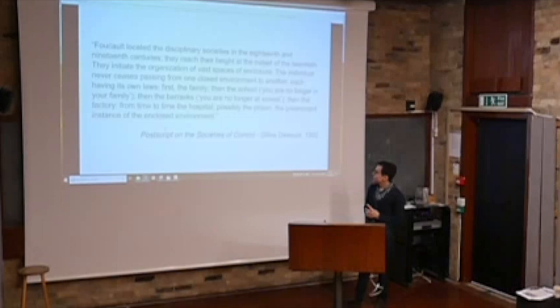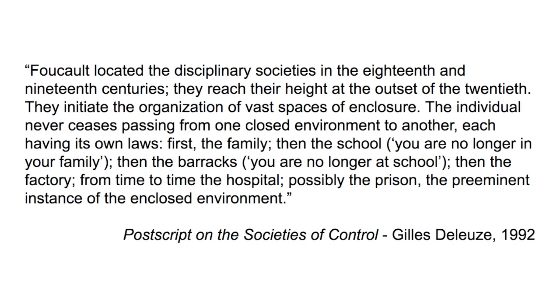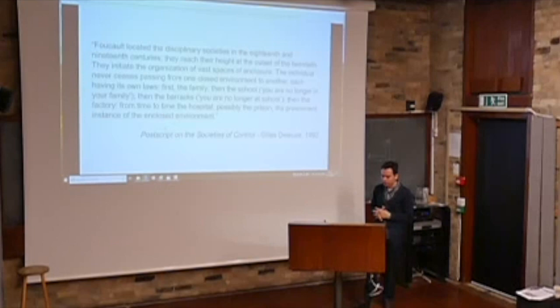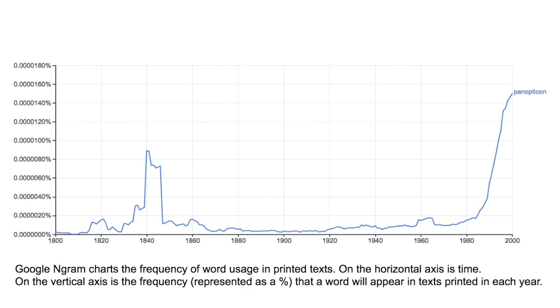Foucault locates disciplinary societies in the 18th and 19th centuries, reaching their height at the outset of the 20th century. They initiate the organization of vast spaces of enclosure. The individual passes from one enclosed environment to another, each having its own laws: first the family, then the school, then the barracks. Foucault constructs a kind of universality of this disciplinary mechanism, saying it follows you throughout life — and I would like to question whether that is indeed so.